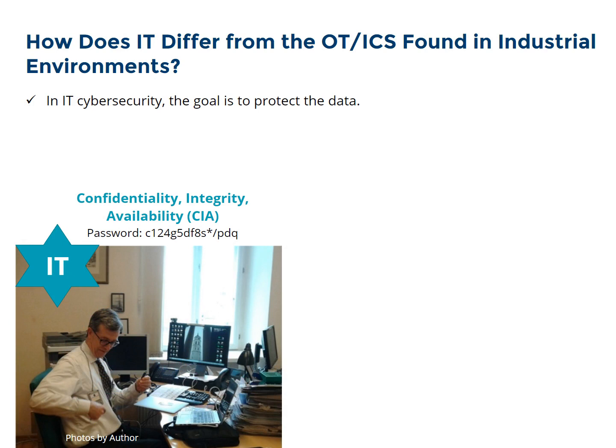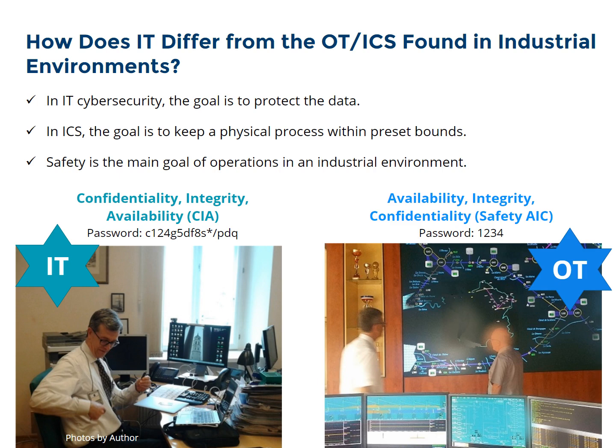How does IT differ from ICS in industrial environments? In IT cybersecurity, the operation is to protect data and information — confidentiality, integrity, and availability are very important. Confidentiality means only authorized users can access information; integrity ensures the information is accurate and uncorrupted; and availability means you can get to it when you need it. In ICS, the operation is to keep a physical process within preset bounds. Safety is the main driver for operations in an industrial environment — not the data, but how the process is going: are the safety systems in place, is the BPCS working, and is the flow of fuel and distribution of electricity proceeding as planned?